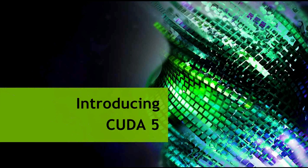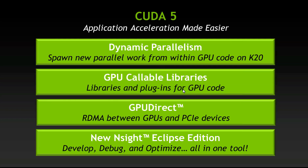That sounds great. I'm happy to share what's new in CUDA 5. CUDA 5 is the fifth generation release of the CUDA parallel programming platform and programming model. In this release, as with every release, there are a lot of new features, but there are four that we're really excited about and want to highlight today. The first is dynamic parallelism, which we discussed at the GPU Technology Conference in the context of the new Kepler GPU computing architecture. We want to talk about that from the software programming perspective, and then there's also a new way of using libraries and sharing code on the GPU.